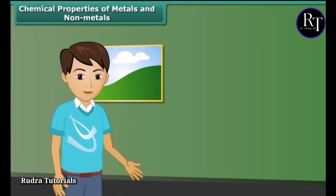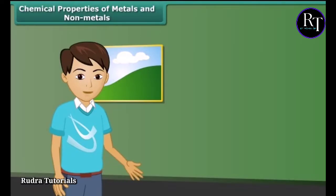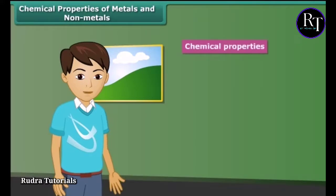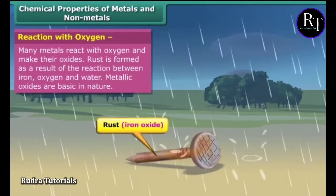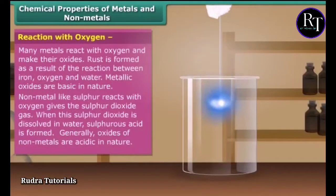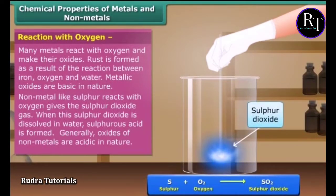Friends, after discussing the physical properties of metals and non-metals, let's know about their chemical properties. Metals like iron, copper, and magnesium react with oxygen and form their oxides — these oxides are basic in nature. For non-metals, sulfur reacts with oxygen giving sulfur dioxide gas. Oxides of non-metals are acidic in nature.